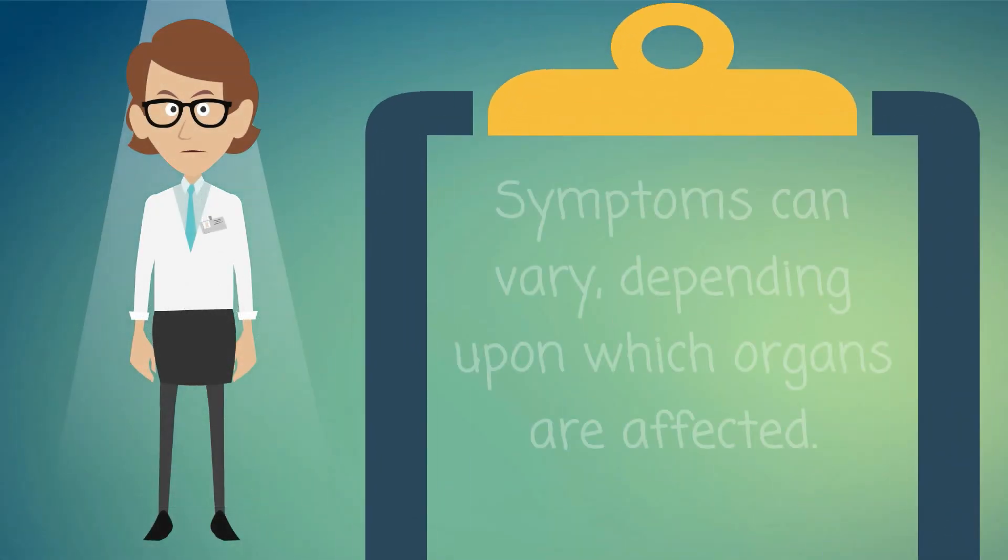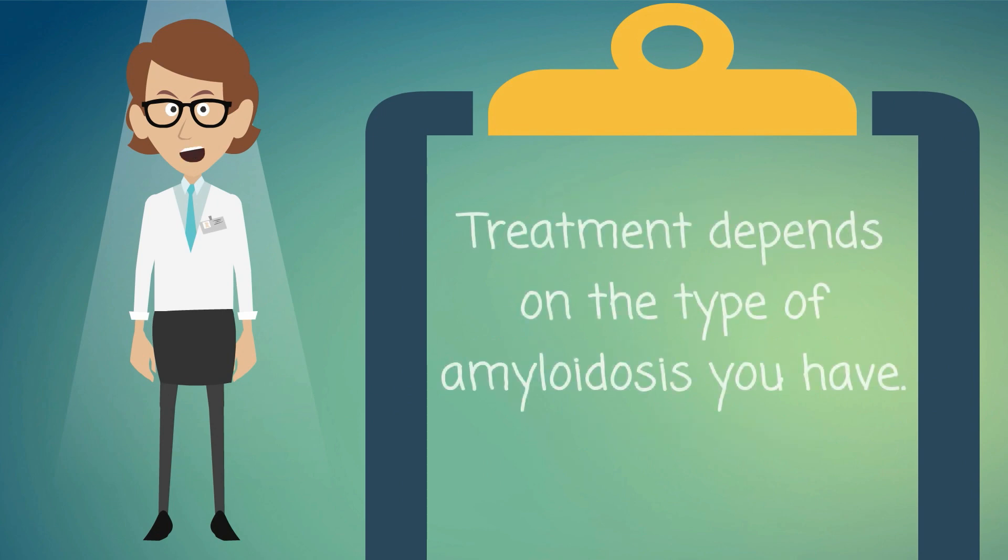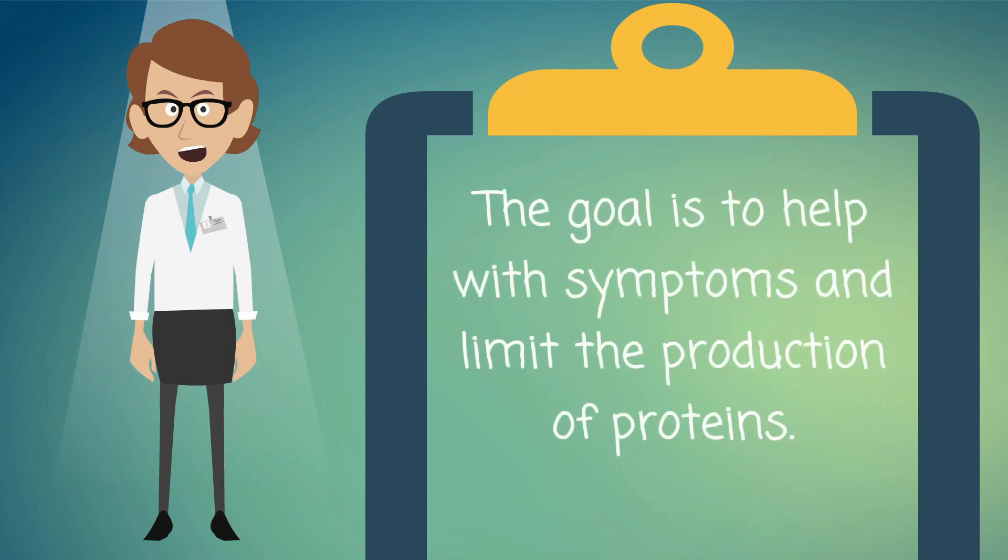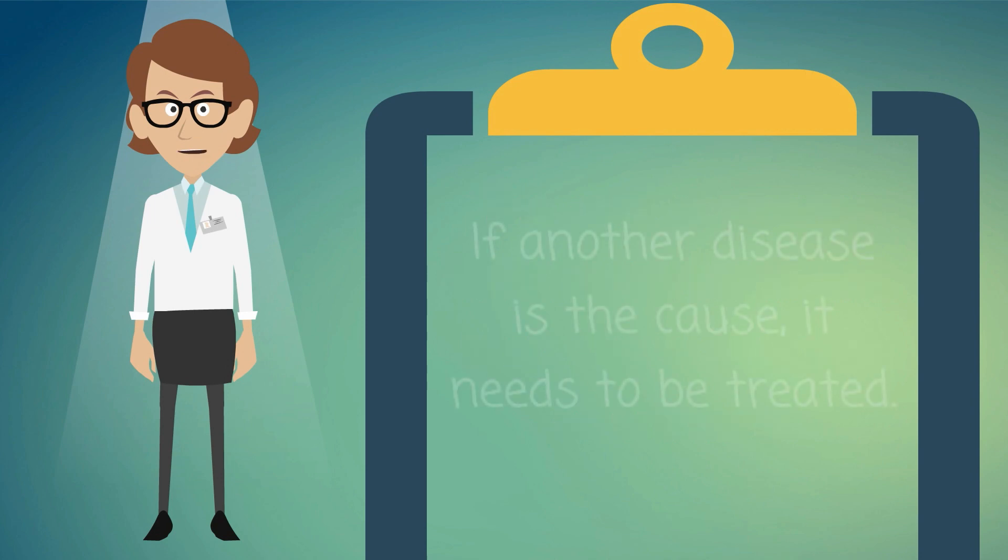Symptoms can vary, depending upon which organs are affected. Treatment depends on the type of amyloidosis you have. The goal is to help with symptoms and limit the production of proteins. If another disease is a cause, it needs to be treated.